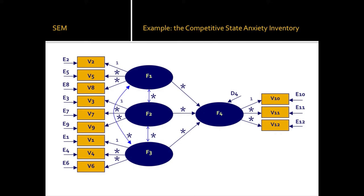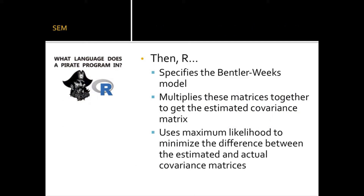Here's the map of stars — the parameters we're estimating. I set the first loading of each factor to one for each of our four factors, so I'm not fixing any variances. All those correlations are two-way arrows with stars representing the estimated correlations. We have a bunch of factor loadings and errors that will be estimated. We specify this in R, and R will do the work for us.